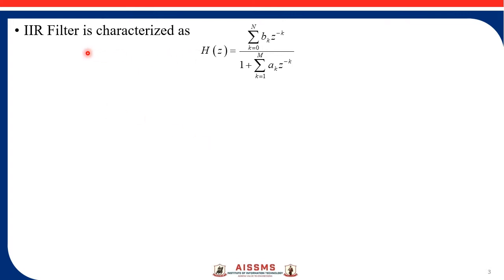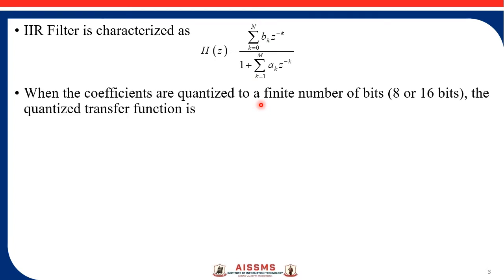The system function of the IIR filter is given with this equation which is shown in the slide, where ak and bk are the filter coefficients. Now, if we quantize these coefficients to a finite number of bits, maybe 8 bits or 16 bits, what will be the quantized transfer function?